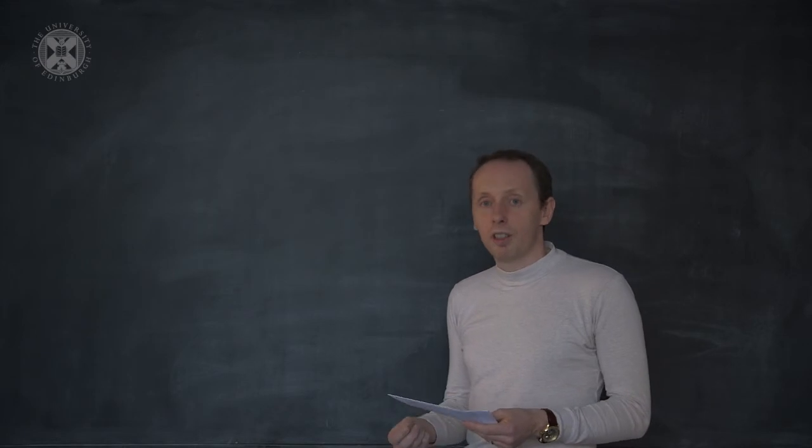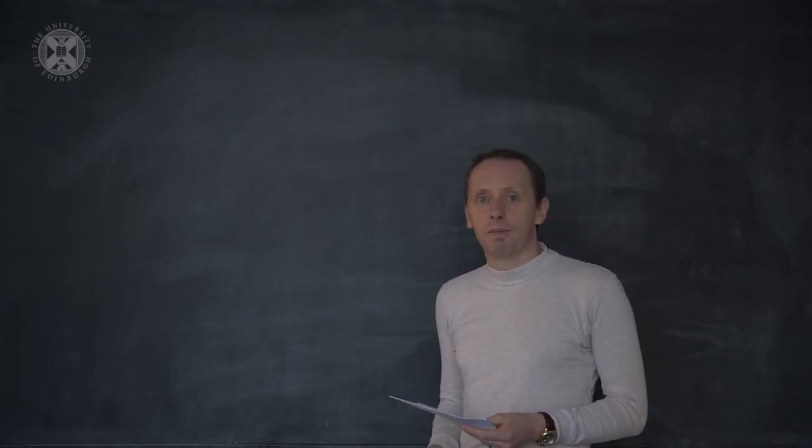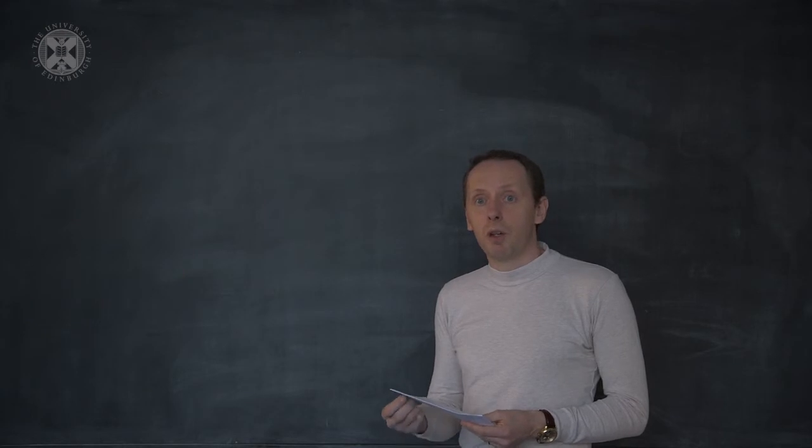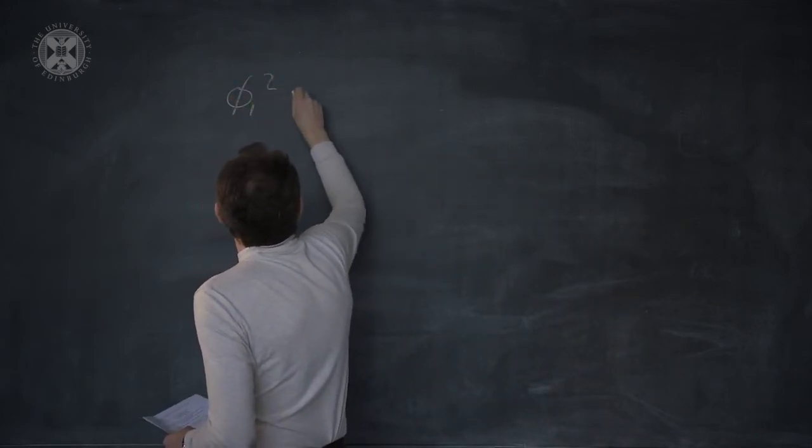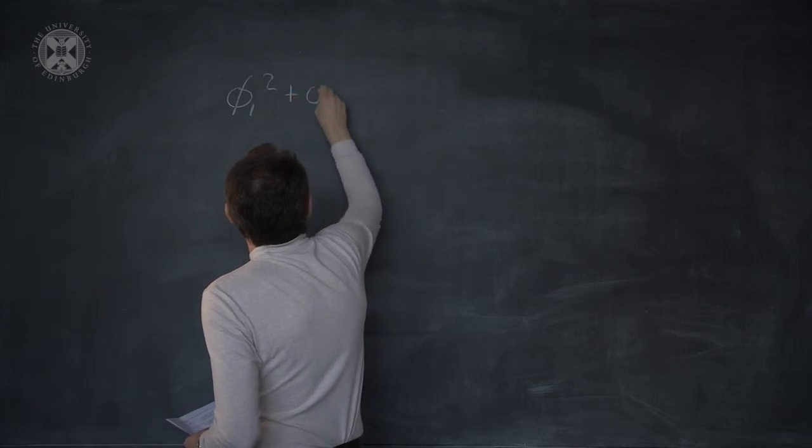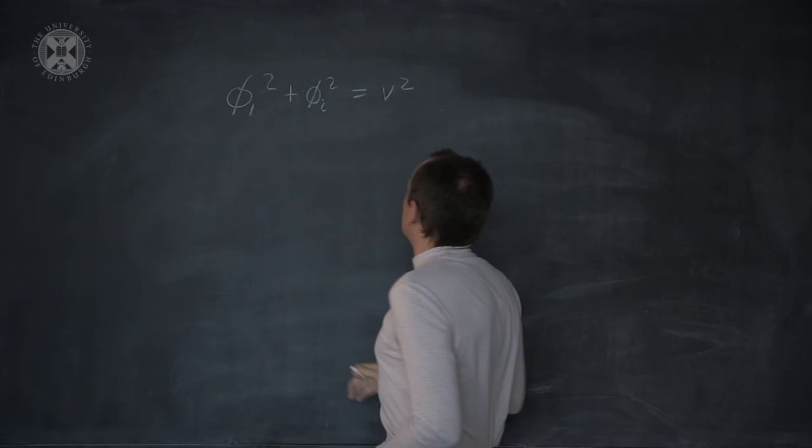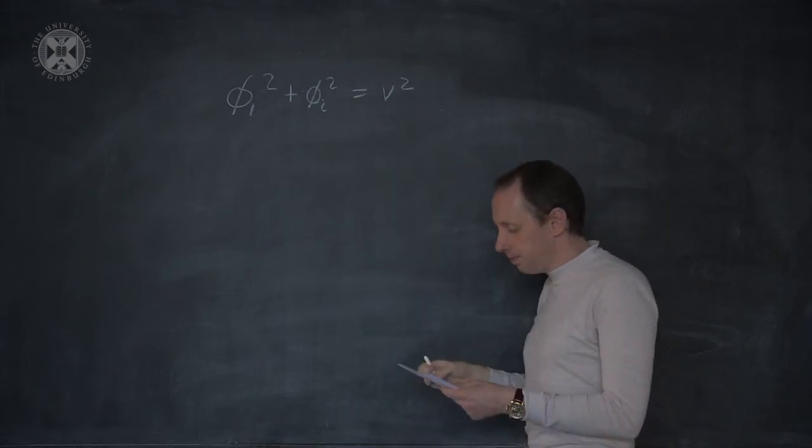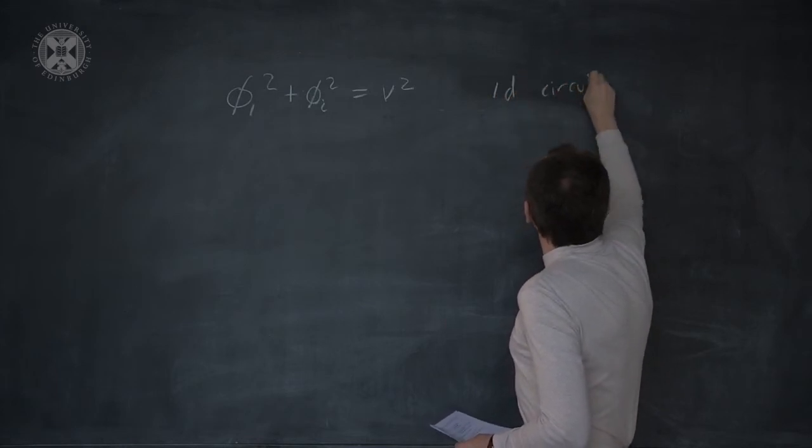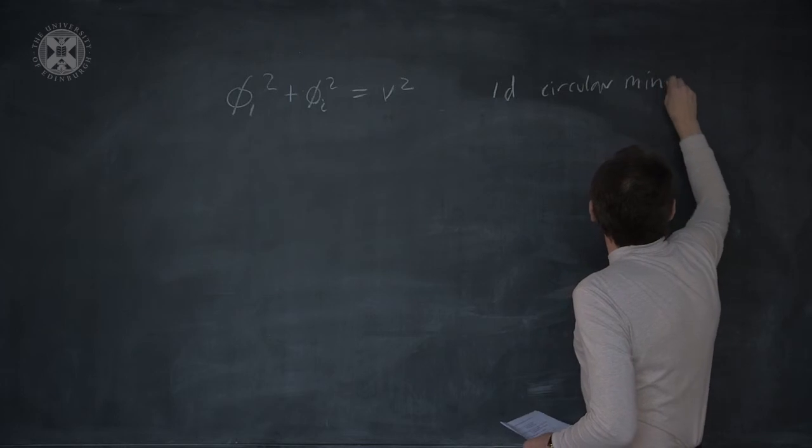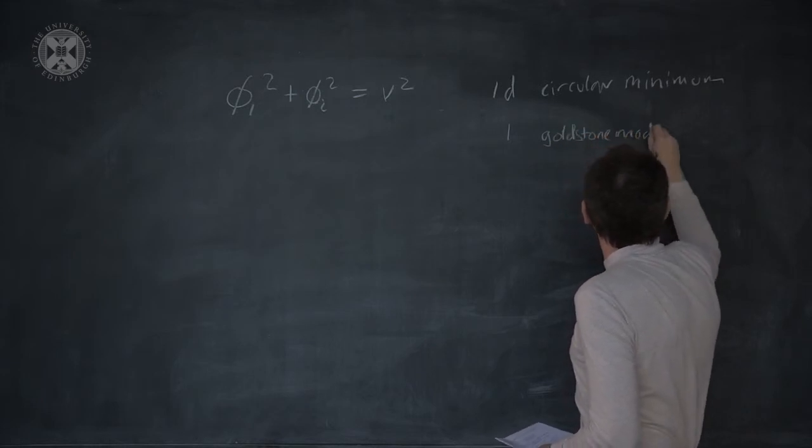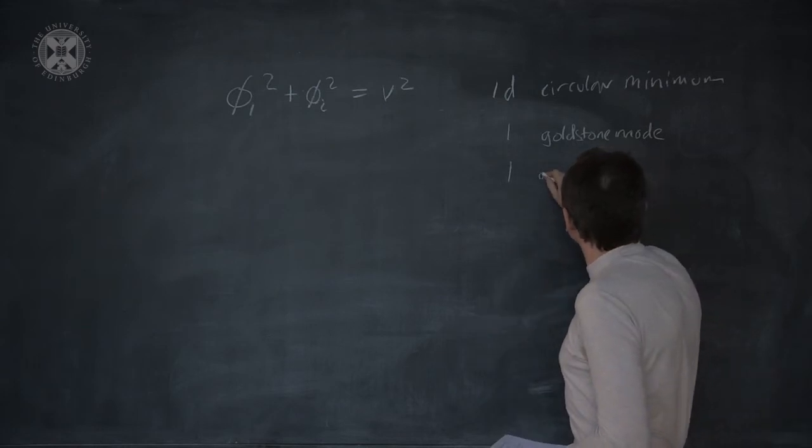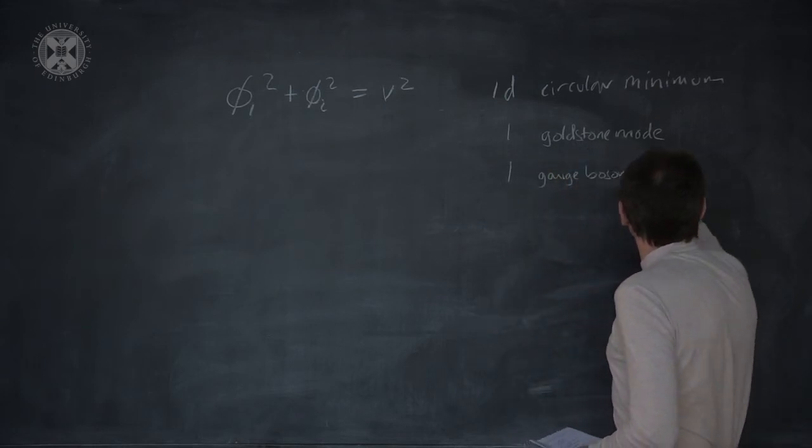Goldstone's theorem also introduced a counting system for the number of Goldstone bosons. It was the dimension of the minimum of the potential that mattered. With the Higgs mechanism, this also determines how many gauge bosons can be given a mass. In our original Higgs mechanism, we have the minimum defined by phi-1 squared plus phi-2 squared is equal to v squared, the radius of the circle. We have a one-dimensional circular minimum, and consequently, one Goldstone boson. And one photon can be given mass through the Higgs mechanism.